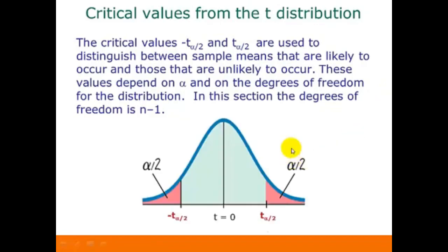Here's what our t-distribution is going to look like, and this looks just like what we did with the critical values from the standard normal distribution. We're going to take our confidence level and use that to find alpha, then split alpha between the two tails of our t-distribution, and then find our cutoff values, which will be our critical values.